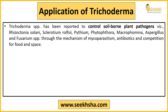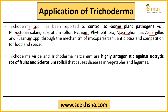Every Trichoderma subspecies has its own different benefits and uses. Trichoderma species also control soil-borne pathogens such as Rhizoctonia solani, Sclerotium, Pythium, Phytophthora, Macrophomina, Aspergillus, and Physarium — fungal infections — because of mycoparasitism qualities and the antibiotics they release. Trichoderma viride and Trichoderma harzianum also have a strong antagonistic effect against Botrytis rot in fruits, and help control Sclerotium rolfsii.